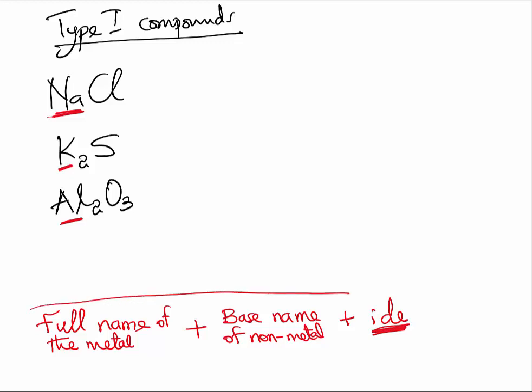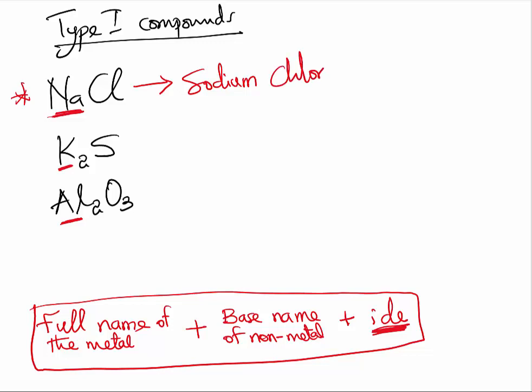Let us apply this format to the 3 compounds above. The first compound, we have sodium as the metal, so we will write the full name sodium. Then we want to write just a little part of the name of the non-metal. The non-metal is chlorine, but we will only write chlor so that we can end the name with IDE. So the name of the first compound is sodium chloride.